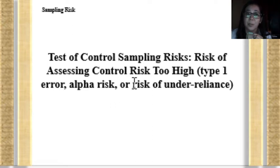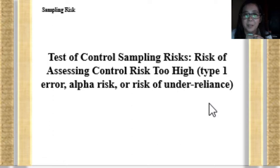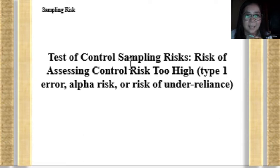The auditor might assess control risk to be high, meaning he assessed the internal control of the client as not operating efficiently or effectively. He will under-rely or will not rely on the internal controls because he assessed it as having high risk — in other words, the internal control is not reliable. This is the risk of assessing control risk too high, or risk of under-reliance.